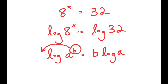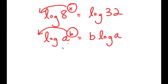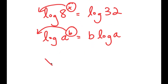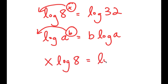So now, in the case of log 8 to the power of x, we can think of x as b, so we can move x to the front of the logarithm. I get x times log of 8 is equal to log of 32.